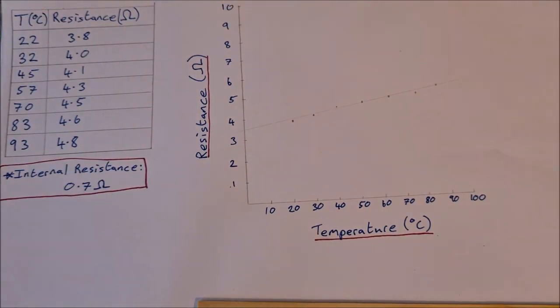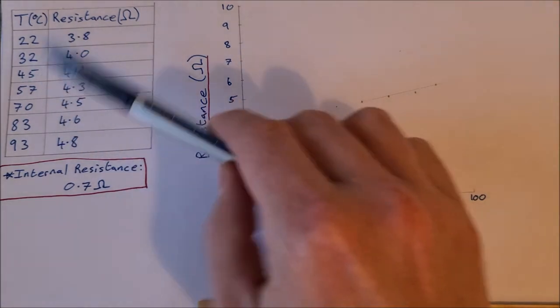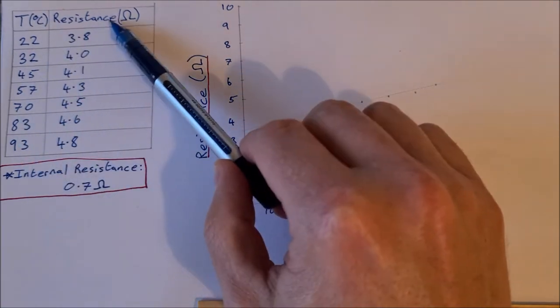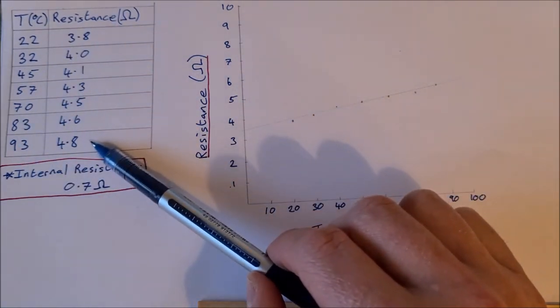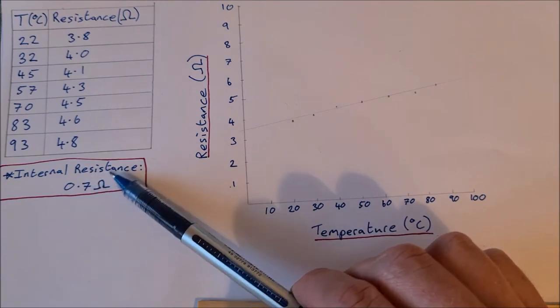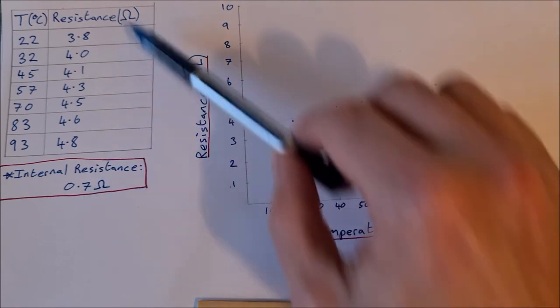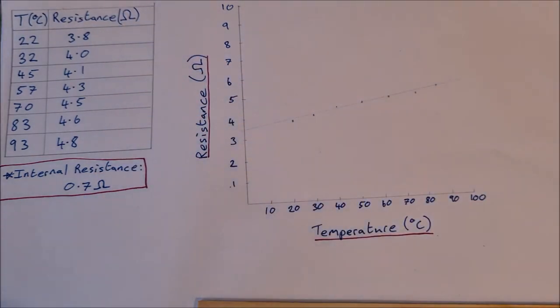A quick analysis of the results from this one. We can see the table here with different temperatures and resistances. These are the actual resistances, I've already taken out the internal resistance of the leads and the ohmmeter which was 0.7 ohms.